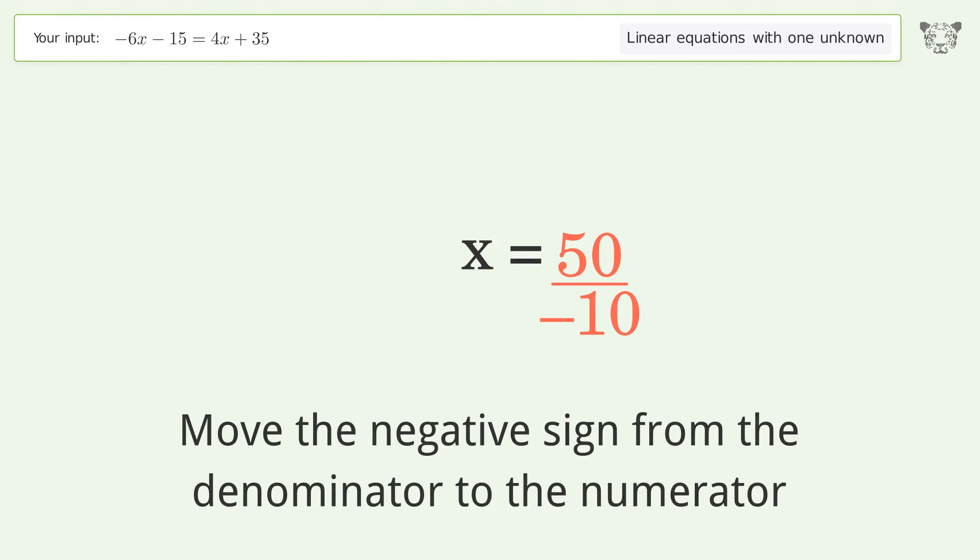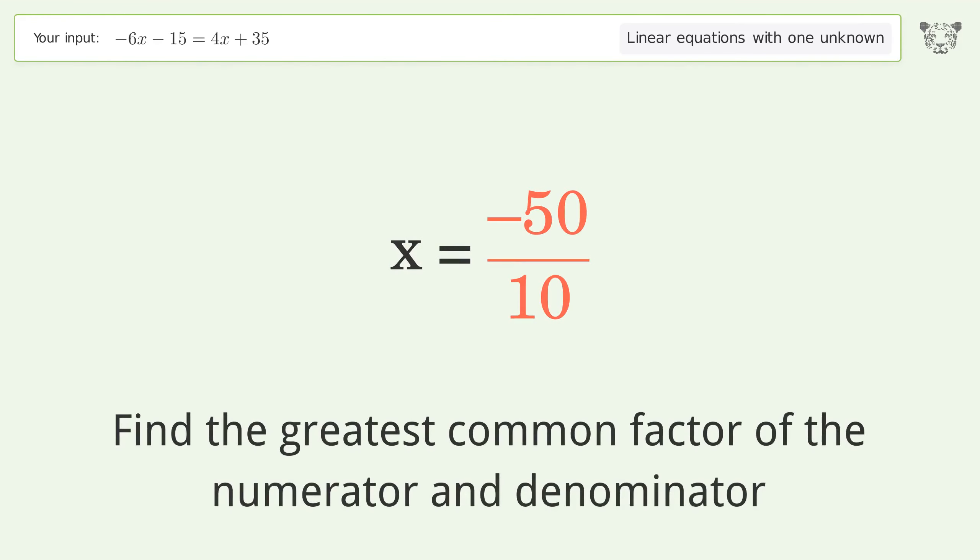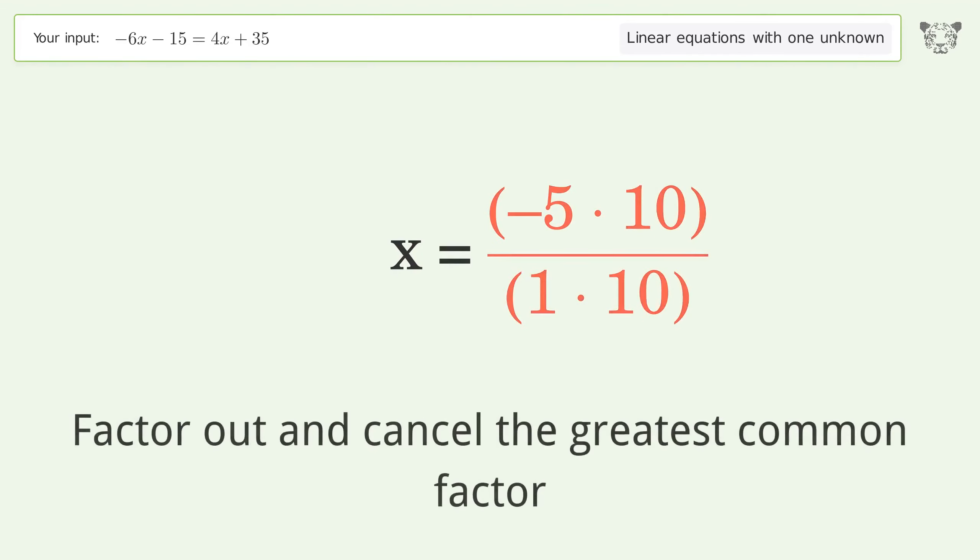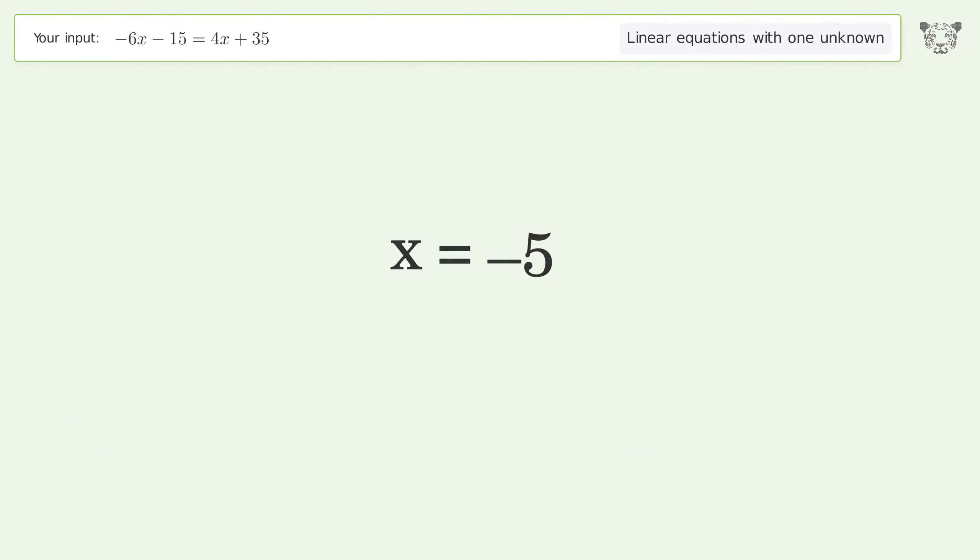Move the negative sign from the denominator to the numerator. Find the greatest common factor of the numerator and denominator. Factor out and cancel the greatest common factor. And so the final result is x equals negative 5.